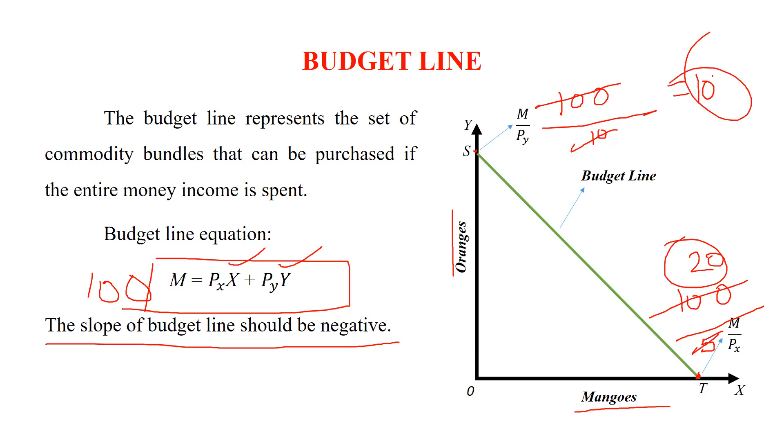So if you want to purchase a combination of both, you have to reduce number of oranges, then only you can purchase more mangoes. So this is your budget line.